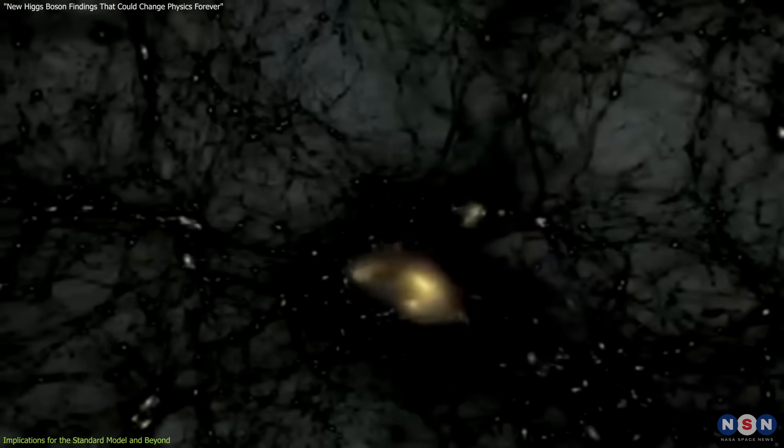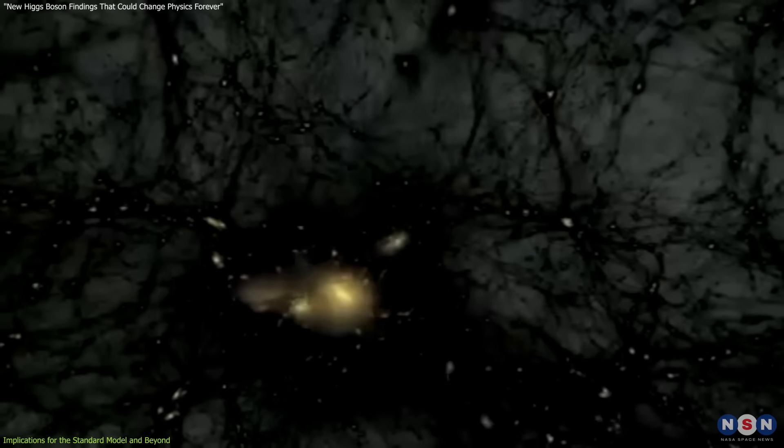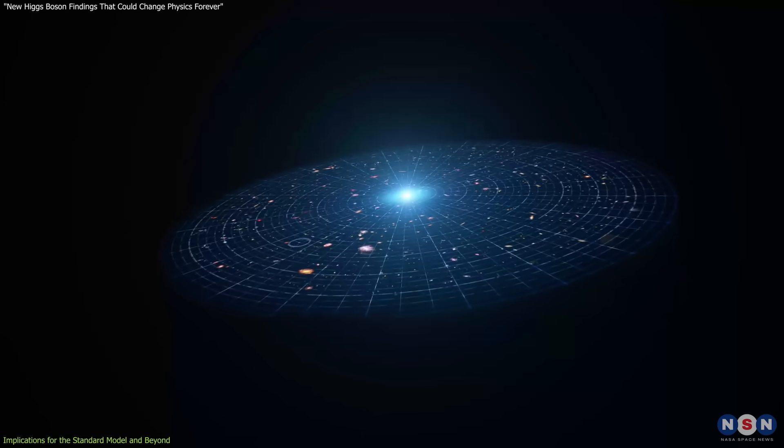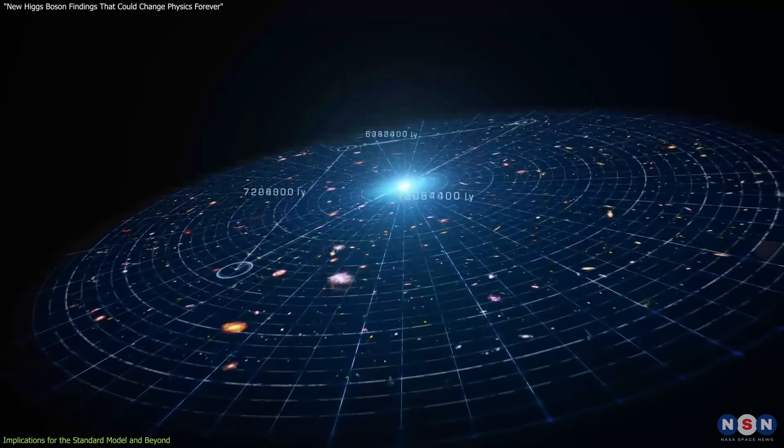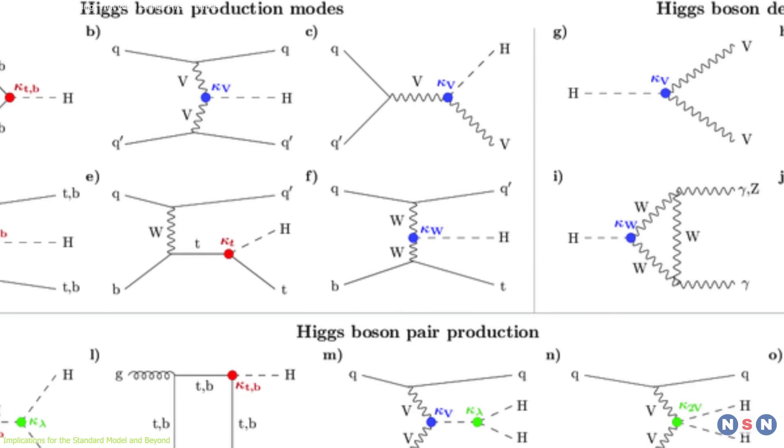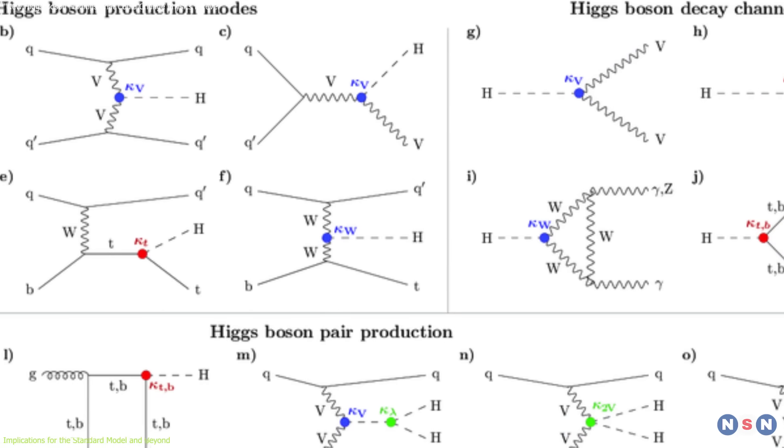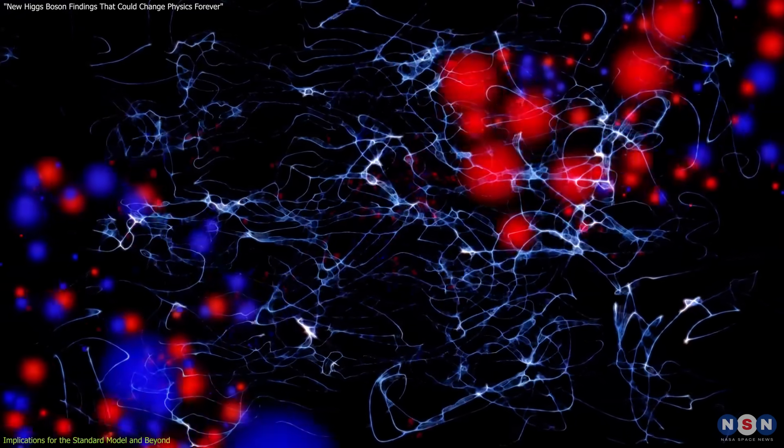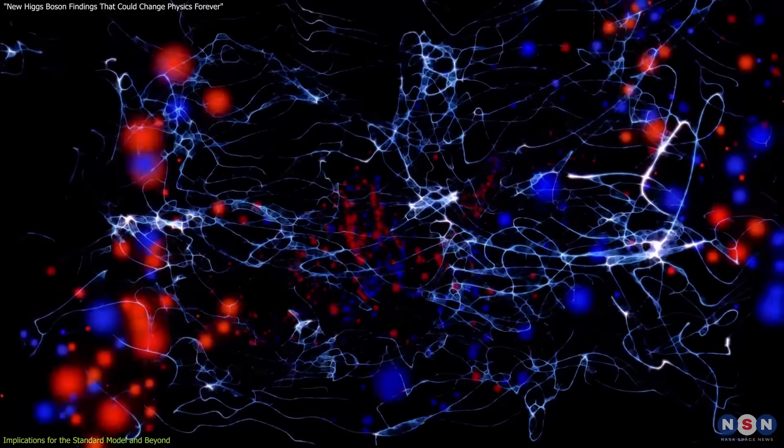For instance, it fails to account for phenomena like dark matter, which constitutes 27% of the universe, or dark energy, responsible for its accelerating expansion. The confirmed interactions of the Higgs boson with W and Z bosons add more weight to the Standard Model's predictions, but any deviations from these findings could signify new particles or forces.